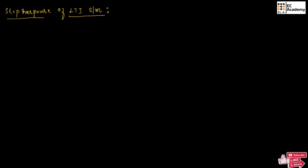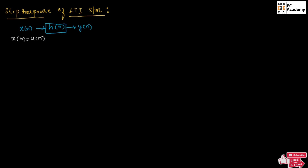Let us consider a system with impulse response H of n, input X of n, and output Y of n. The step response of an LTI system is the output of the system when the input is a unit step signal. Therefore, for X of n equal to U of n, the output of the system is known as the step response of the LTI system.